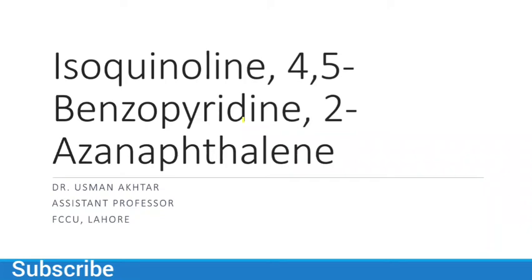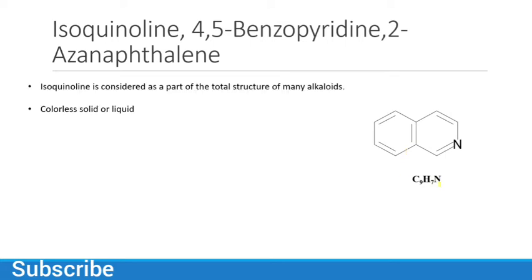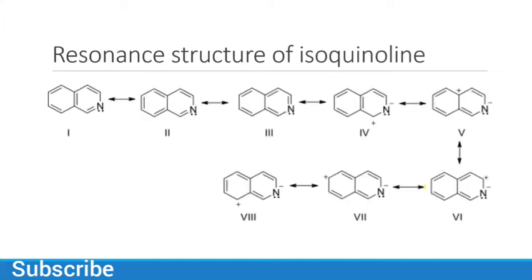We will study isoquinoline, which is 4-5-benzopyridine. The structural formula is the same as quinoline — C9H7N — but the structure is different. Isoquinoline is considered a part of the total structure of many alkaloids, whether liquid or solid, and is insoluble in water but soluble in most organic solvents.